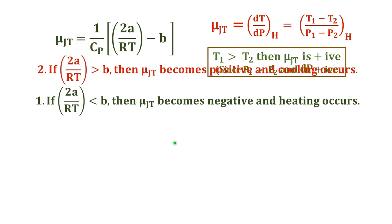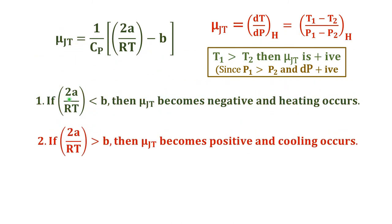Condition 2 is just the reverse of condition 1. If 2A/RT is greater than B, then µJT becomes positive, which leads to cooling. In this condition T1 is greater than T2, so dT is positive. Since dP is always positive — because you apply pressure and expand the gas, so P1 is always greater than P2 — if 2A/RT is greater than B, then µJT becomes positive.